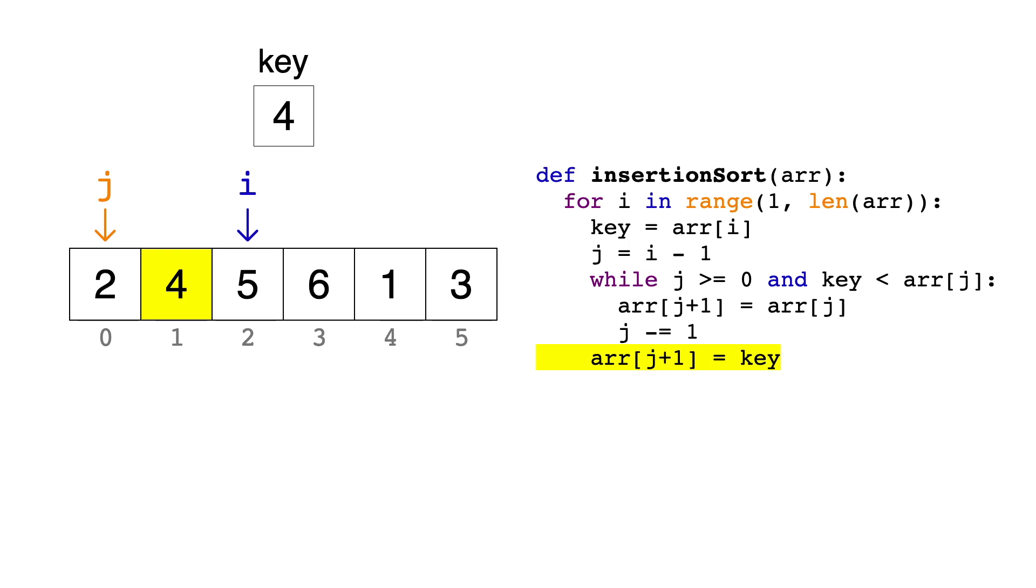Now this next iteration is kind of a special case. Let's increment i, take the key, and set j equal to i minus 1. When we test our loop condition, we see that 6 is not less than 5. In other words, the key doesn't have to be moved. We skip the loop entirely, and just overwrite the key, 6, with itself. This is an important point about insertion sort. When the key was already in the correct position, we were able to skip the inner loop entirely, and just move on to the next item.